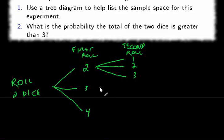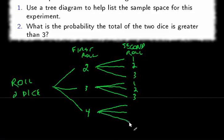If the first roll is three, the possibilities again for the second roll are one, two, and three. And if the first roll is a four, the second roll could be again one, two, or three.